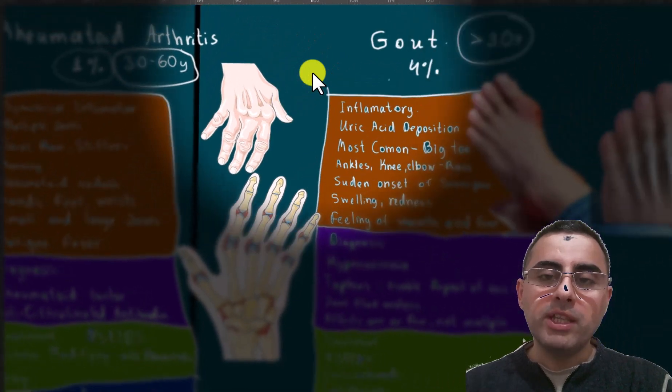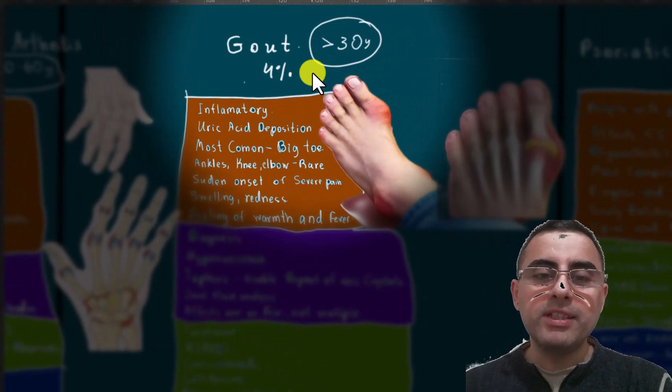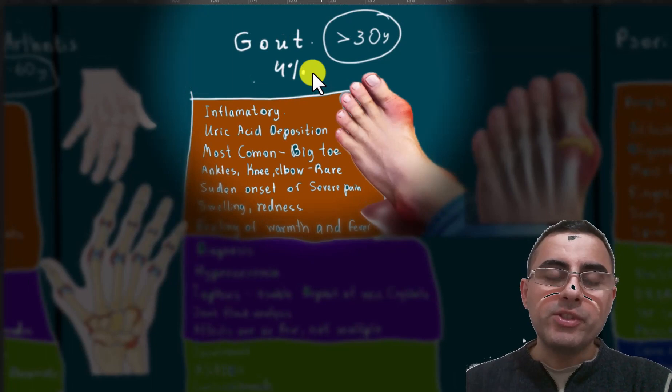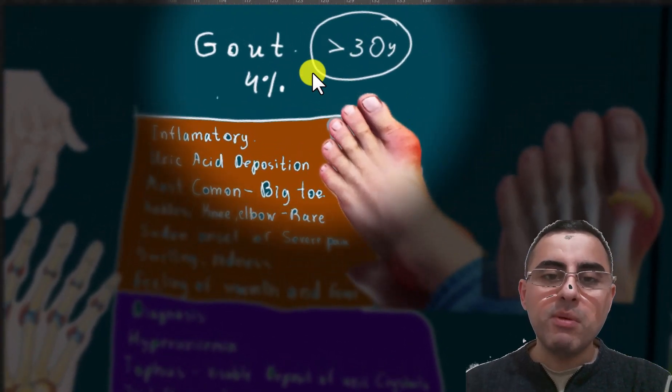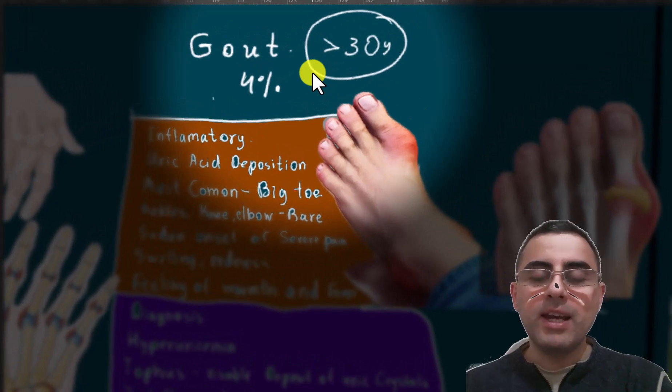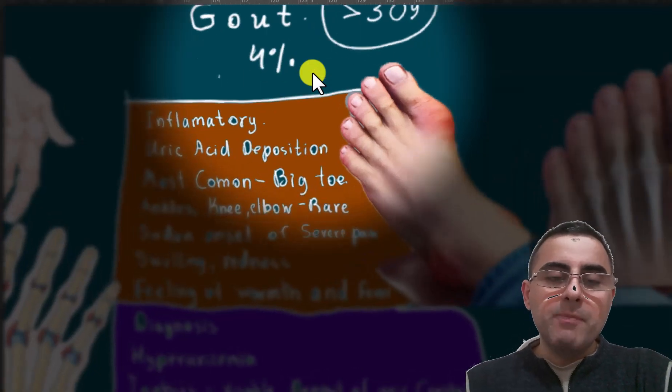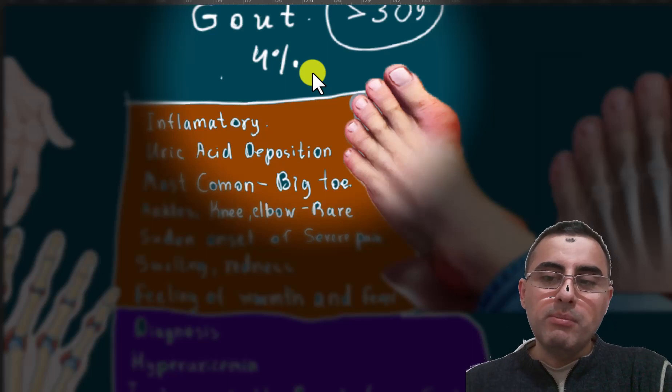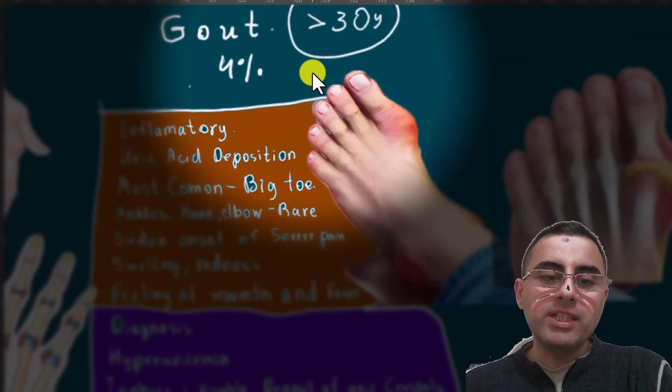Third and also important disease which is also common and causes joint pain is gout. Gout affects around 4% of the population, which is quite high, and it's more often diagnosed after 30 years. It is an inflammatory disease and the main mechanism is uric acid deposition on joints.